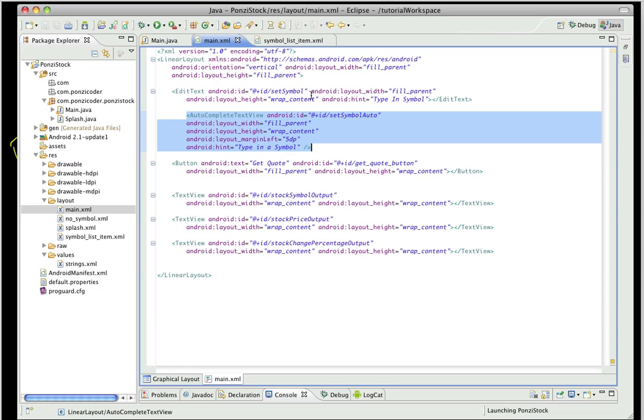Now we will eventually, by the end of this section, take out the set symbol edit text because we don't want both of those in there. But for now we're just going to leave it in. So here's our autocomplete text view - it's got an ID of set_symbol_auto, and we've set the width and height as far as fill_parent and wrap_parent. I've adjusted the left margin to have a little bit of space there, and then the hint is just type in a symbol, just like we had for our edit text.